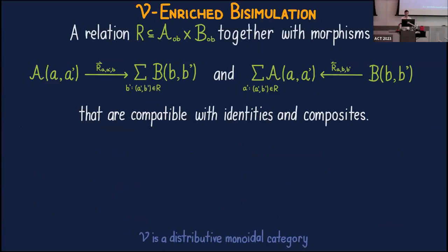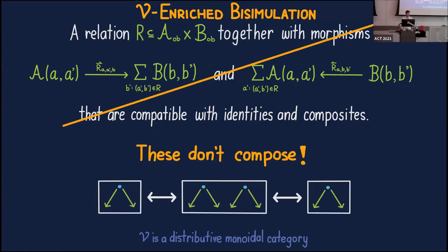Let's have a go at defining a notion of enriched bisimulation. One might think it should be a relation between the object sets, and just like for enriched asymmetric lenses we need some morphisms between the hom-objects encoding the idea of pushing morphisms from one category to the other and back again. You probably want these morphisms to be compatible with identities and composites, and you can work out what those conditions might be. But at some point when you get to defining composition you realize this doesn't work.